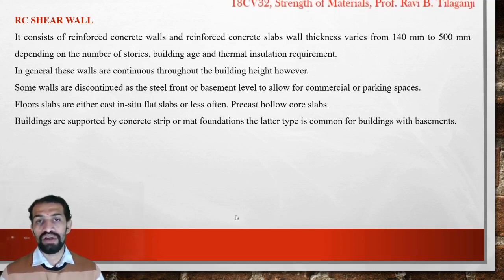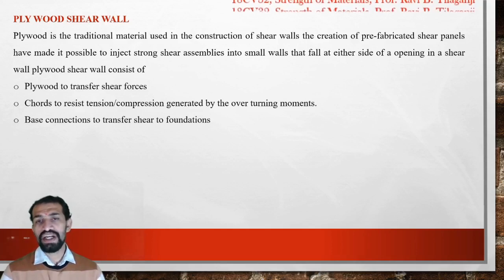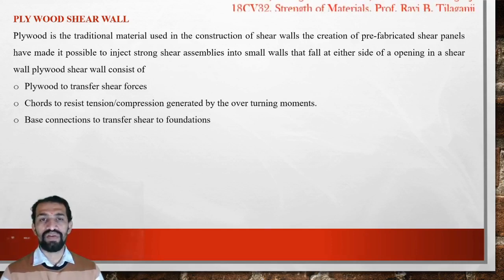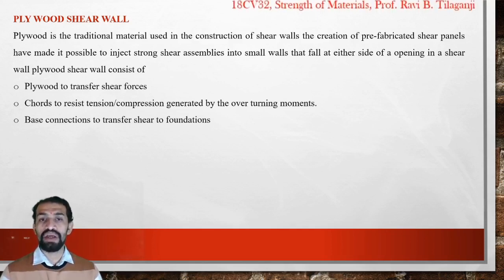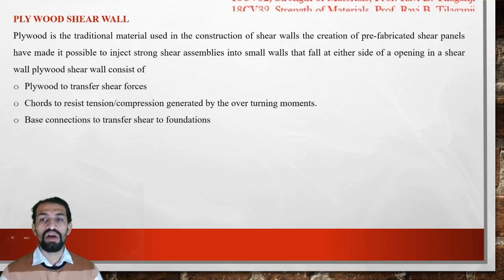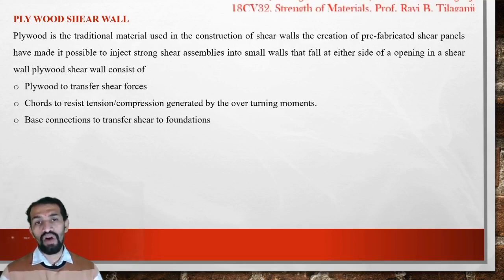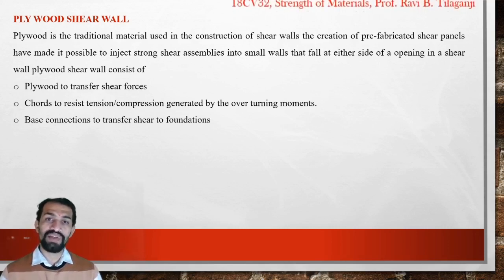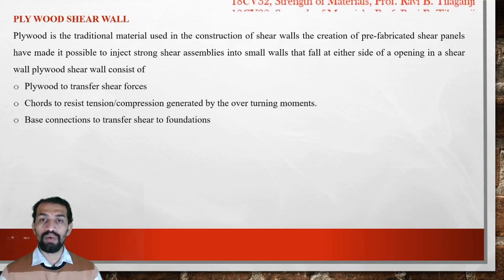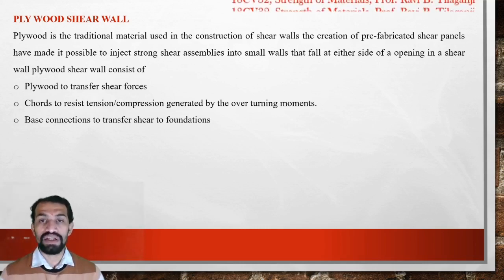Plywood shear walls use a traditional material where construction can be done with plywood. Prefabricated shear panels have made it possible to inject a strong shear assembly into small walls that fall on either side of an opening in a shear wall. Plywood shear walls consist of plywood to transfer shear, with thickness varying from 10 mm to 25–30 mm, and sometimes 50 mm where two plywoods are attached.